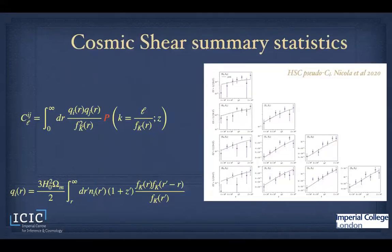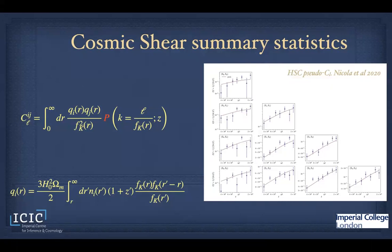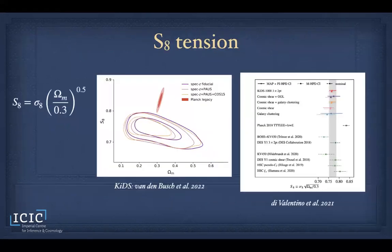For statistics, we normally use power spectrum statistics — we measure the clustering of the distortion pattern and compare it with theory, much as with the CMB. This shows the tension between Planck and most of the weak lensing surveys.